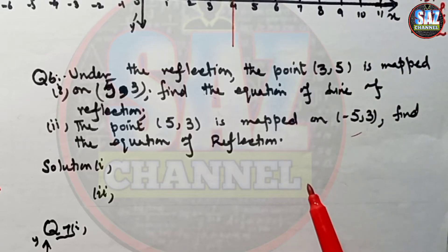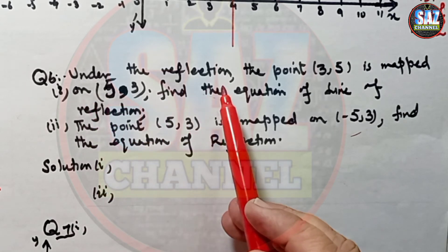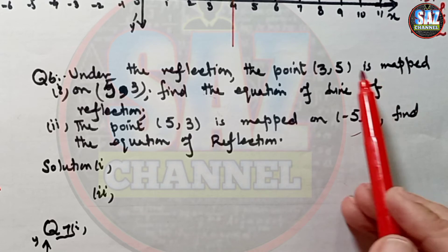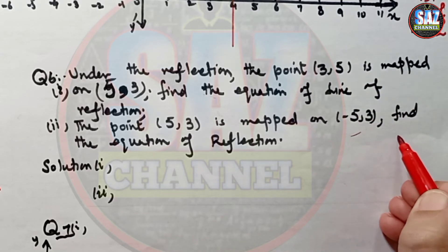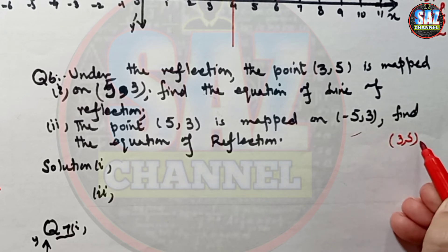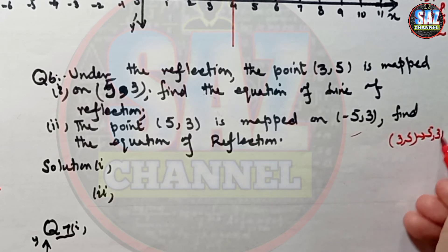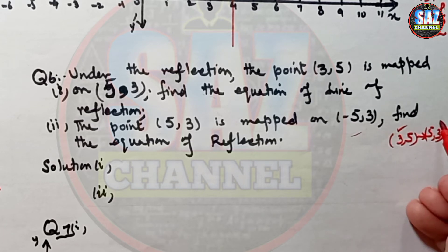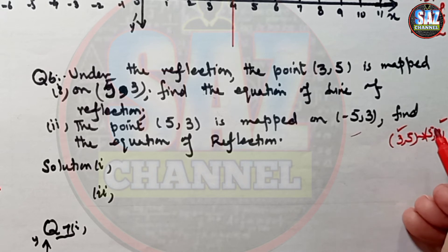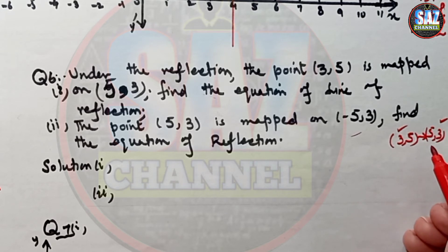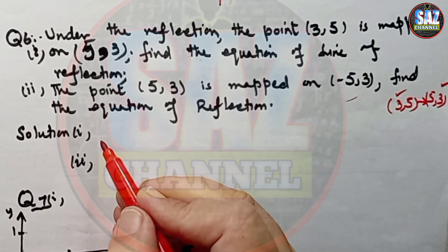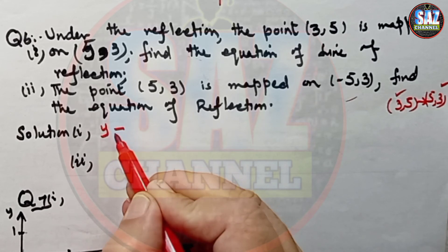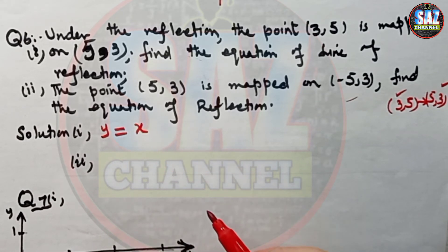Let's move to the next question. Under a reflection, the point (3, 5) is mapped onto (5, 3). Observe that the x-value of the object has become the y-value of the image and vice versa. This is the rule for reflection in y equals x. So the equation of the line of reflection is y equals x.